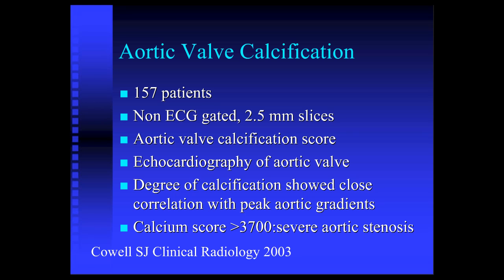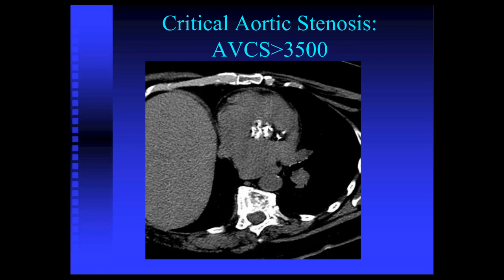Aortic stenosis can be evaluated beyond high-tech cine imaging by simply measuring the amount of calcification in the aortic valve. A great study by Dr. Cowell showed that a calcium score of the aortic valve closely correlates with the degree of aortic stenosis. Calcium scores over 3,700 correlate very well with severe aortic stenosis. This measurement can be done even without gated imaging. In a patient with known critical aortic stenosis, the calcium score was over 3,500, providing insight into the gradient across the valve — no gating, no contrast required.